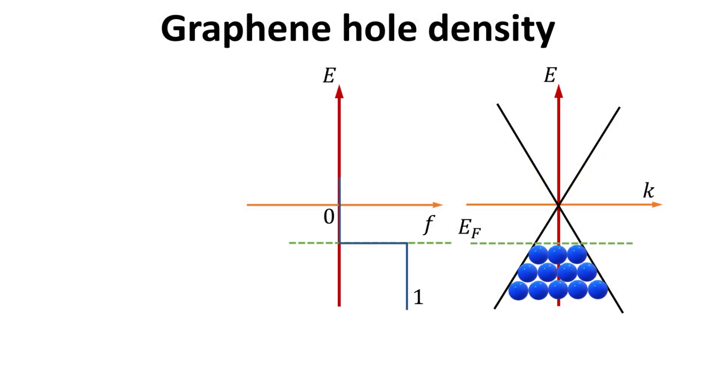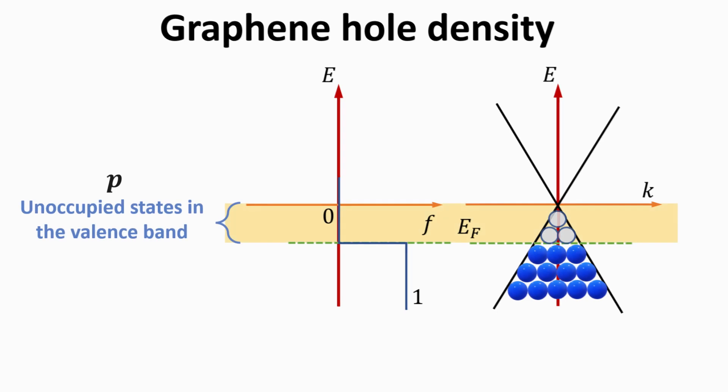On the other hand, if the Fermi energy is in the valence band, it will lead to depletion of electrons which would otherwise be present in the charge-neutral case. The depleted electrons would lead to net positive charge. We call an unoccupied electronic state in the valence band a hole, and it has the same charge as an electron, but positive.